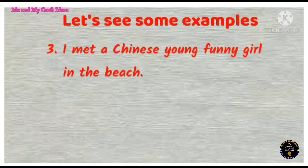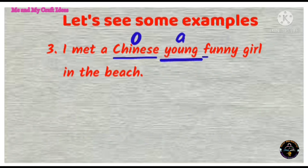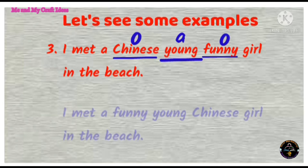I met a Chinese young funny girl in the beach. Here in this sentence, Chinese is origin, young is age, and funny is opinion. So the correct adjective order is: I met a funny young Chinese girl in the beach.